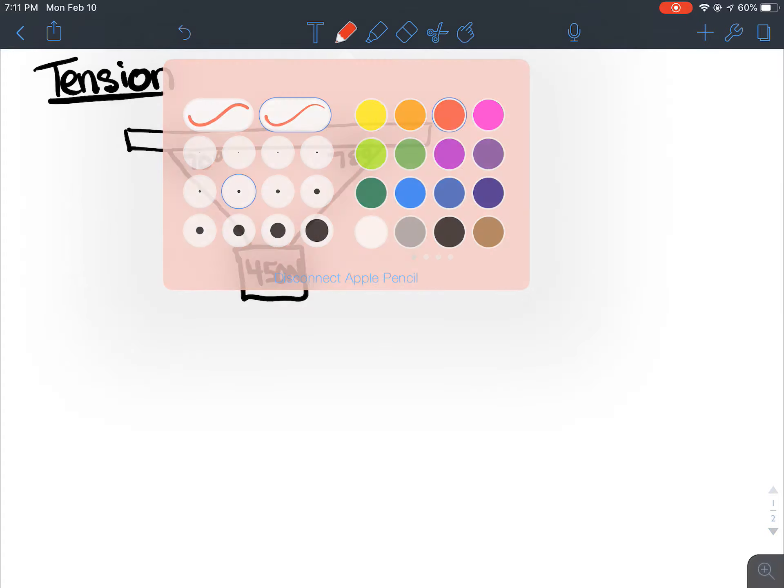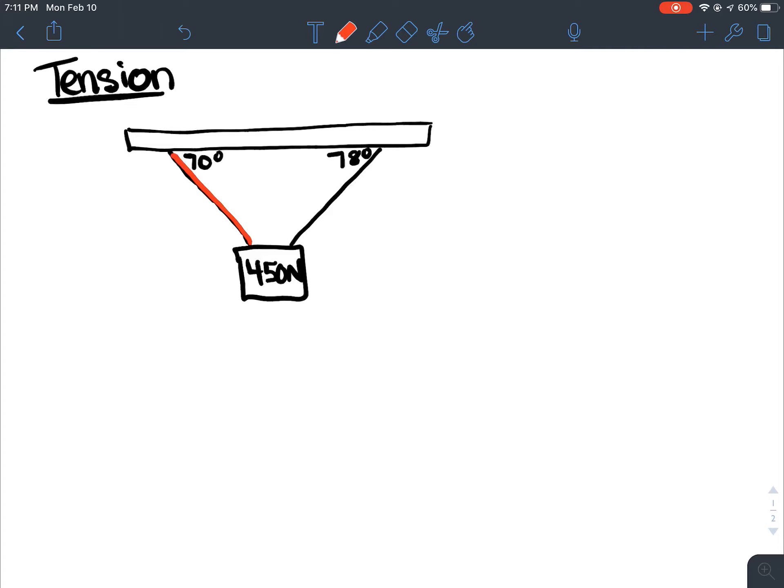So what's happening in this diagram is these two tensions are pulling up like this, and this 450 newtons is pulling down like that, and nothing's moving. So all three of these vectors basically have to add up to nothing, right? Because the sign's not moving. So we've got two tensions in the wires, and we want to know what the magnitude of those tension is. What's the size of that?